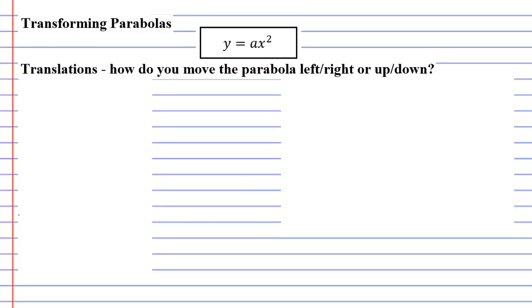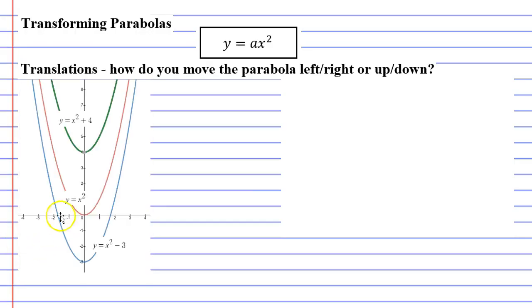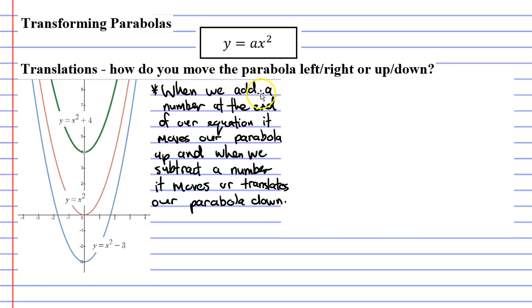So let's make a little note about that. First of all, here's an image of what we've just done. So we'll say that when we add a number at the end of our equation, it moves our parabola up. And when we subtract a number, it moves or translates our parabola down.